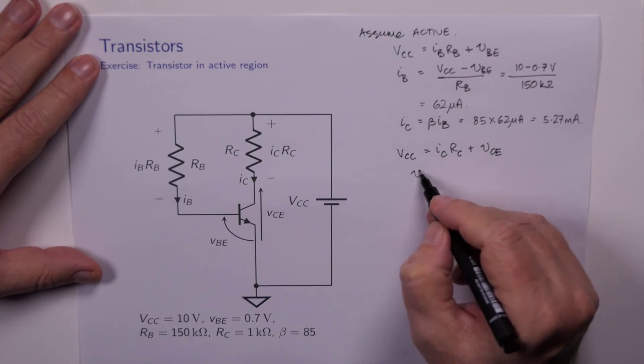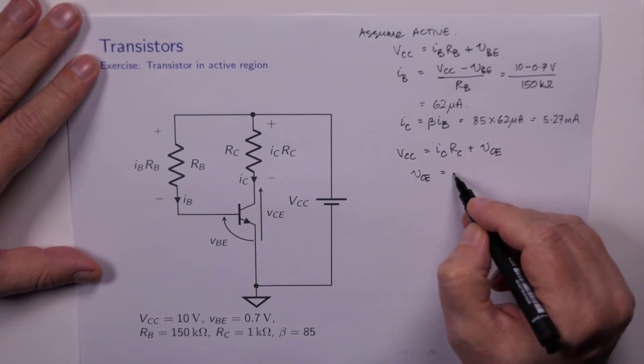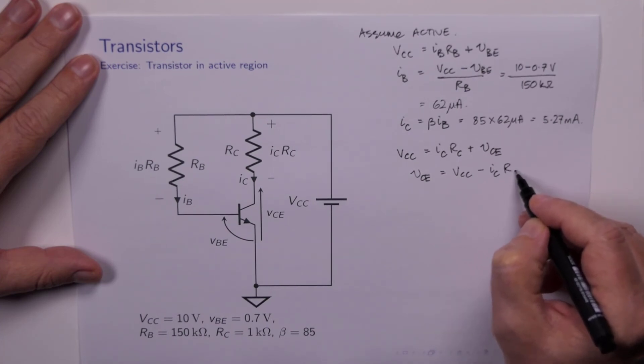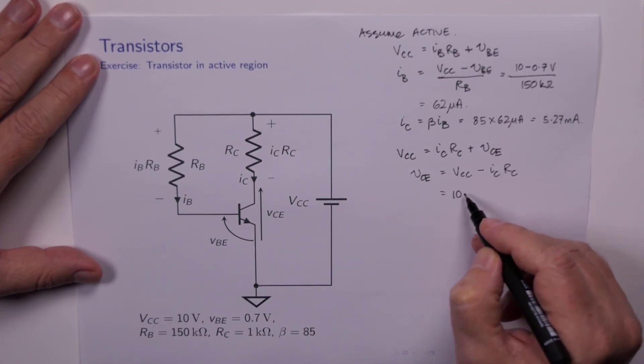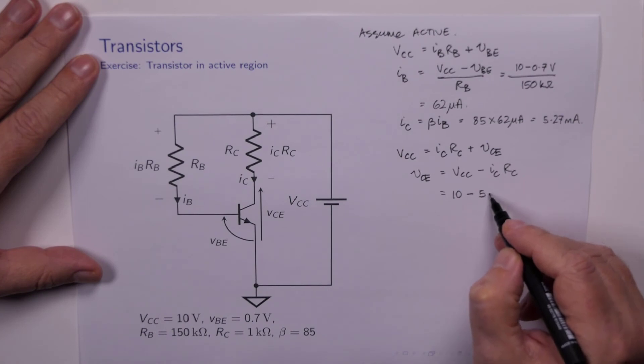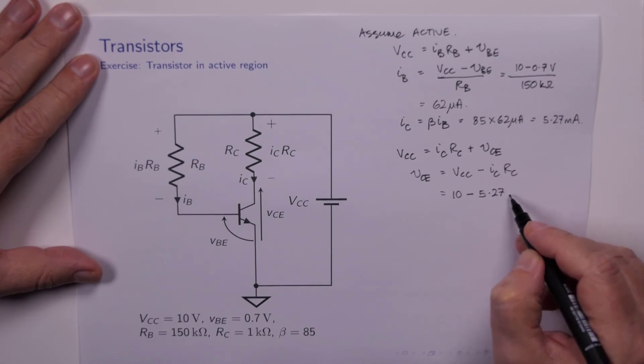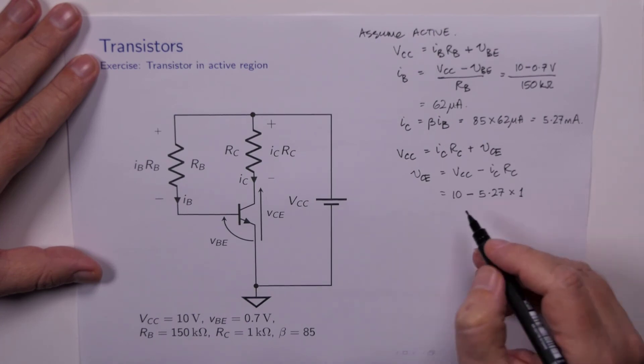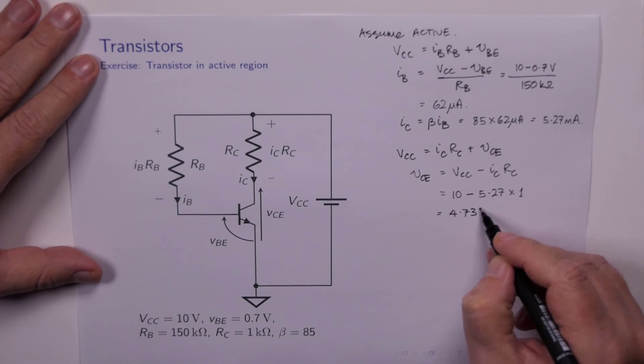We can say that VCC equals IC RC plus VCE. So VCE is equal to VCC minus IC RC. So that's 10 volts minus 5.27 milliamps times 1k ohm.